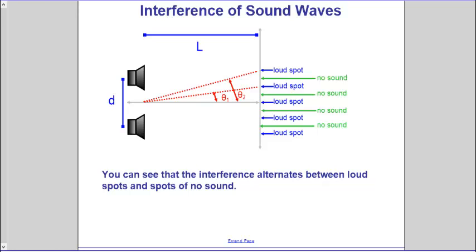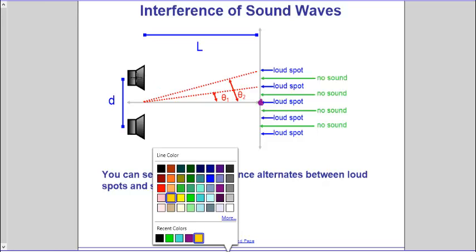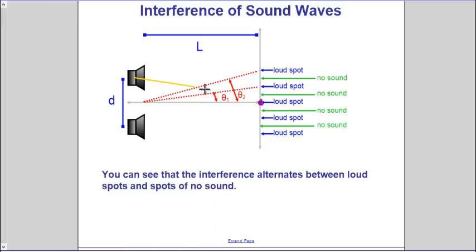I'm going to explain to you why you get a loud spot right in the center at that location. And then we'll explain why you get a loud spot here, and then eventually a loud spot above that. Just imagine there's sound emitted from this speaker, and that sound propagates outward and eventually reaches that spot. It takes some time to get there because it traveled some distance in some time.